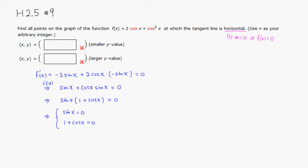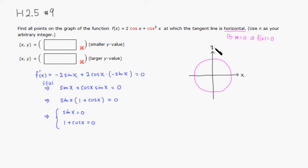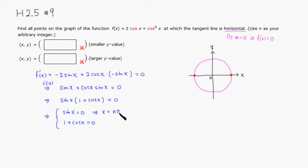Let's look at the unit circle. Remember that sin(x) represents the y-coordinate of the point on the unit circle. When sin(x) = 0, the y-coordinate equals zero, so there are two possibilities: x = 0 or x = π — or you can add any multiple of π. So x = nπ covers all solutions.